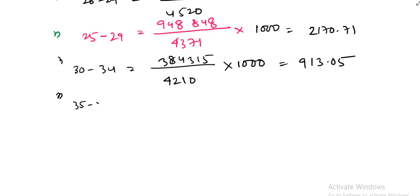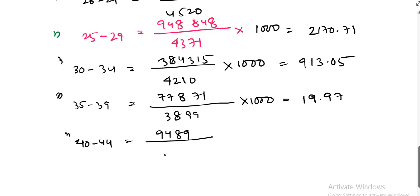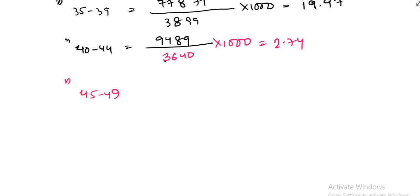To calculate ASFR 35 to 39, it is equal to 77,871 divided by 3,899 into 1,000, that means the result is 19.97. And then ASFR 40 to 44 is 9,489 divided by 3,640 into 1,000, so the result is 2.74. And ASFR 45 to 49, that is 435 divided by 2,850 into 1,000, which is 0.15. So this is the ASFR for all this age.